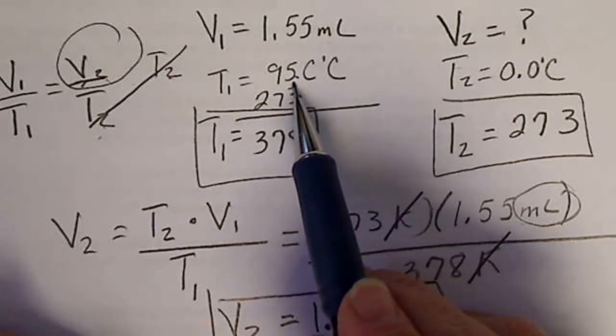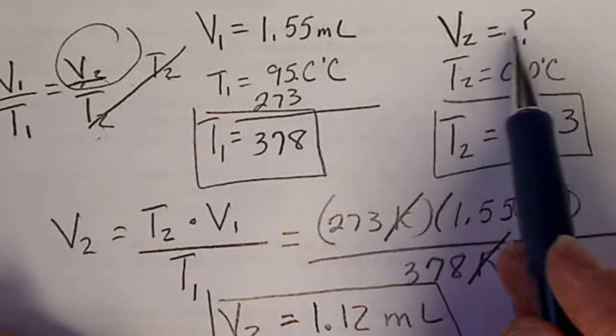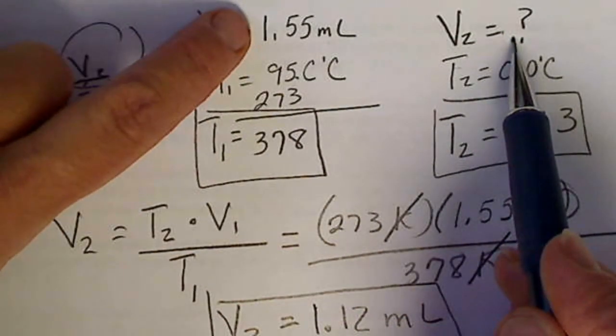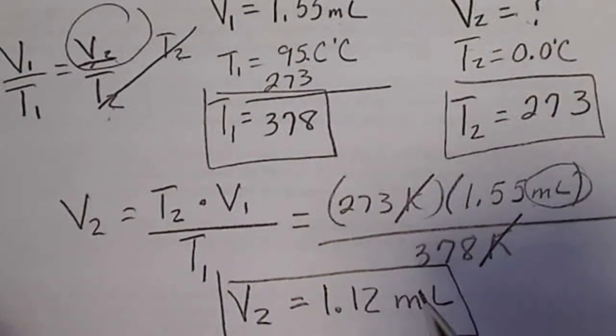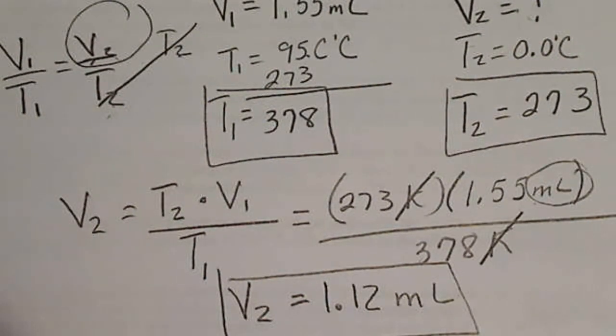So our temperature was at 95. It was cooled to zero. So our new volume had better be smaller than 1.55. And here we can see that that is the case. Thank you.